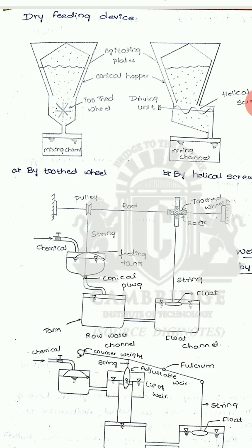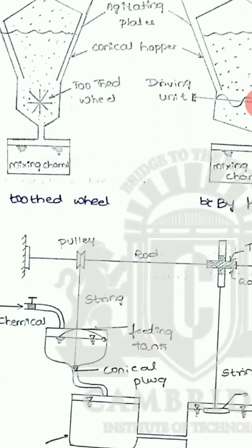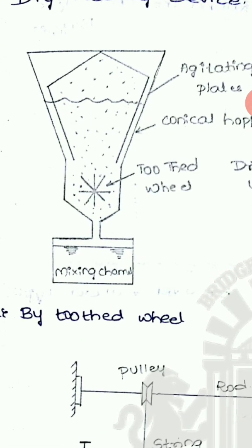The first unit is the feeding device — how chemicals are fed. There are two types of feeding devices: one is dry feeding devices and the second is wet feeding devices. In dry feeding devices, there are two arrangements: one is the toothed wheel and the second is the helical screw.